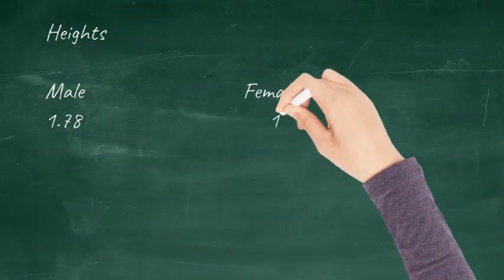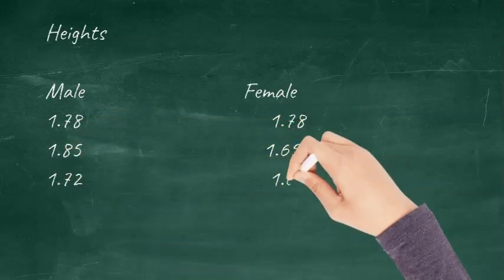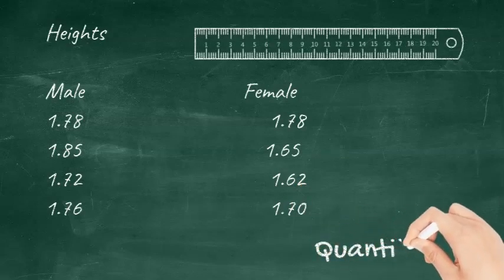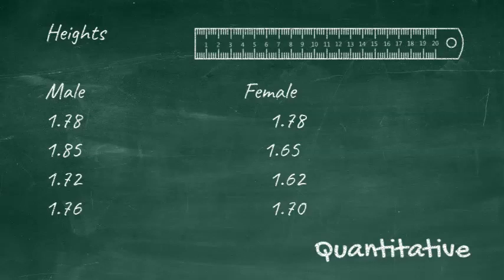The third example is for student height data. In this case the numbers are recorded for male and female students. Heights are given in meters. These data are metric, they follow a scale. In this case a length scale. This data is quantitative.